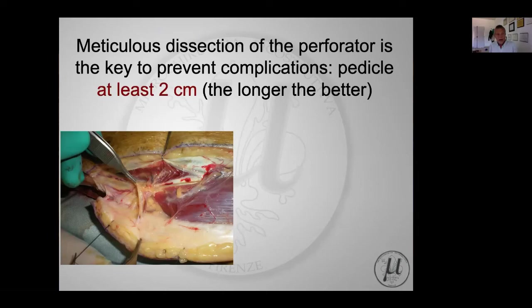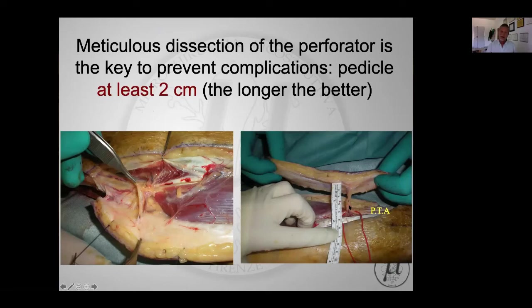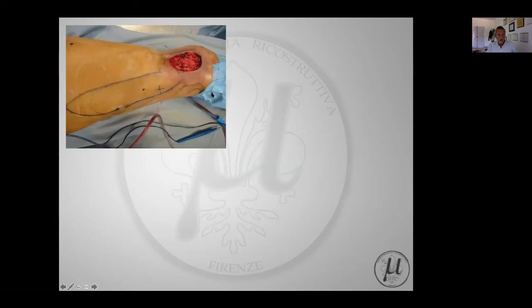Meticulous dissection of the perforators is the key to preventing complications. The pedicle of a propeller flap must be at least two centimeters, but the longer the better - because a longer pedicle reduces the damage of torsion distributed over a greater distance. In our series of 92 propeller flaps, most in the lower limb were based on a perforator from the posterior tibial artery.